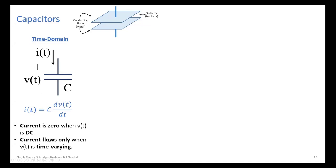Current doesn't actually flow across the insulator inside a capacitor — it's the capacitor charging and discharging that makes it look like current is flowing through it. But from a circuit perspective, from outside the capacitor, that is the current.